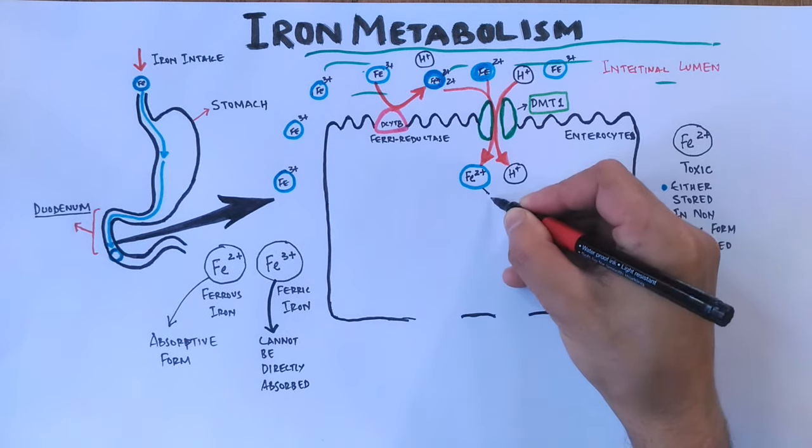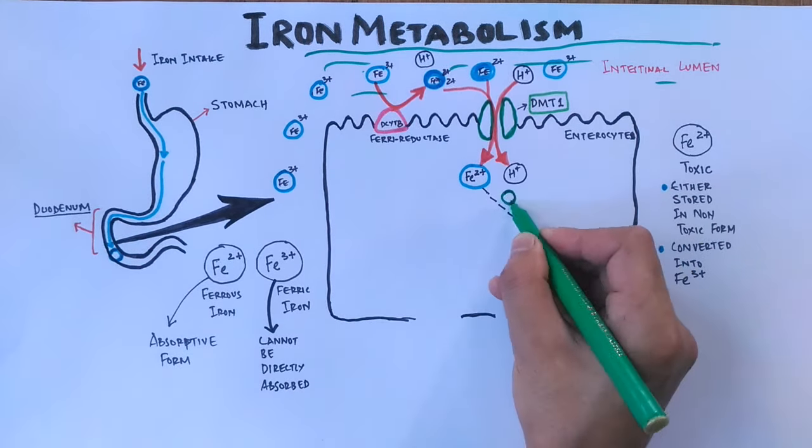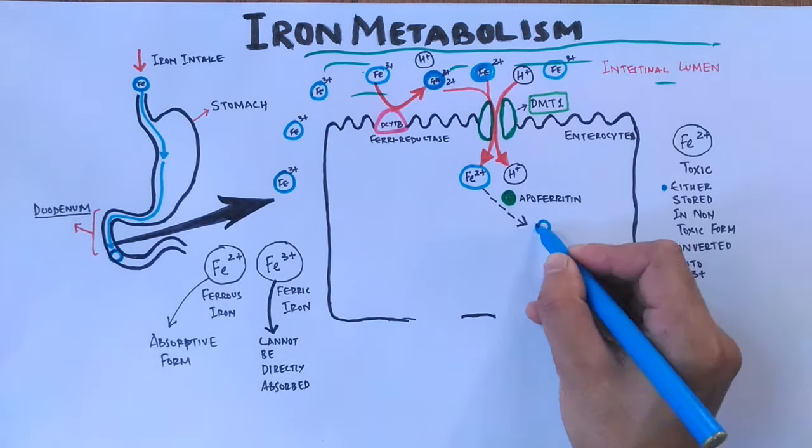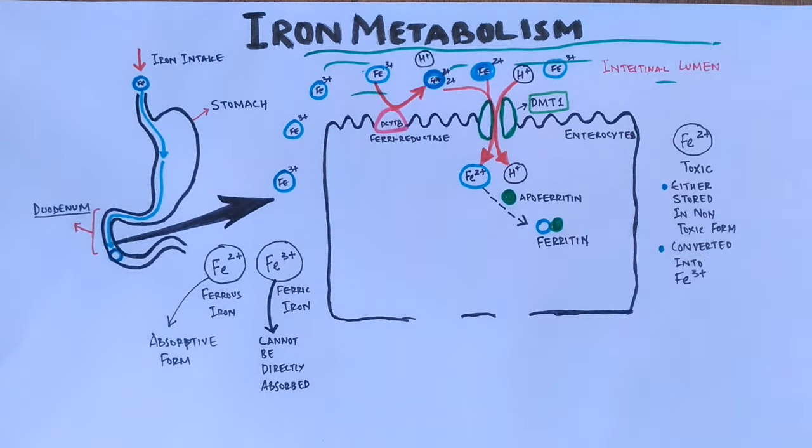Looking further in the process, we see in the cell we have apoferritin molecule which combines with ferrous iron and gets it converted into ferritin, a complex containing the iron ion in the ferric state. The ferritin shows ferroxidase activity which converts Fe2+ ion to Fe3+ ion in the complex, thus storing the iron ions without damaging the cell.